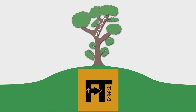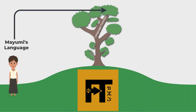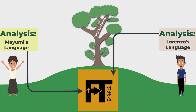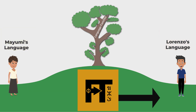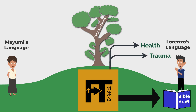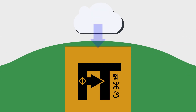FlexTrans can be used to translate the Bible from Mayumi's language into Lorenzo's language, quickly and accurately. With a proper grammatical analysis of each language, a set of linguistic rules can guide the program to produce a very usable first draft of the Bible in Lorenzo's language. As an added bonus, once the system is set up, the community can use FlexTrans to easily translate other works of high community interest, such as health materials, trauma healing resources, even whole books. No internet connection is necessary and little outside help is needed once it's properly set up.